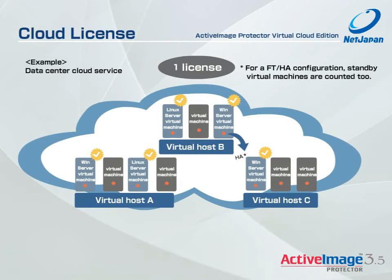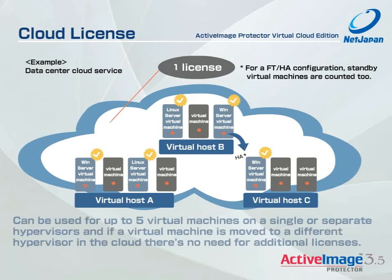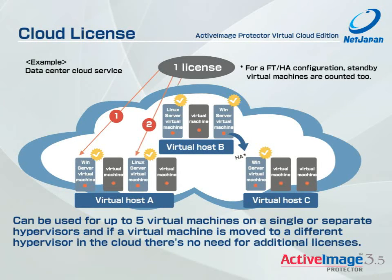And for cloud-based computing, we offer a cloud license. Active Image Protector Virtual Cloud Edition can be used for up to five virtual machines on a single or separate hypervisors. And if a virtual machine is moved to a different hypervisor in the cloud, there's no need for additional licenses.